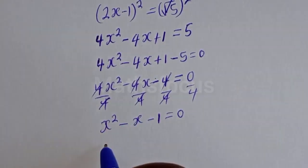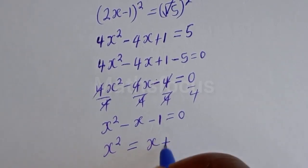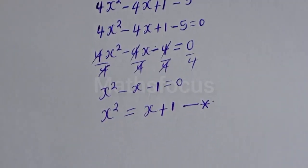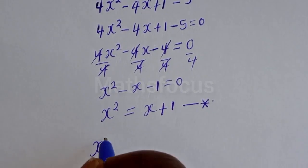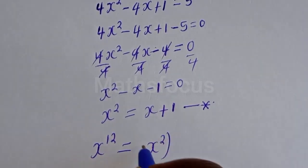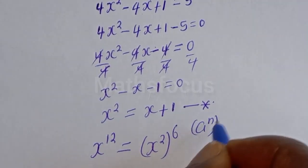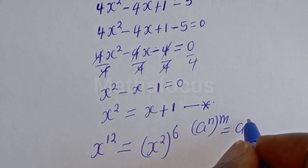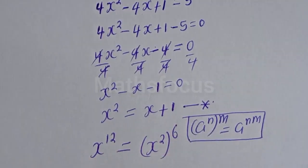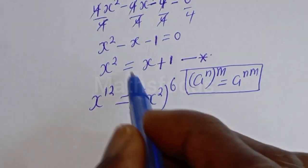From here, X squared equals X plus 1. Let's call this equation star. Now we know that X to the power of 12 can be written as (X squared) to the power of 6, using the exponential rule that a raised to power n, all raised to power m, equals a raised to power n times m. And since X squared equals X plus 1...